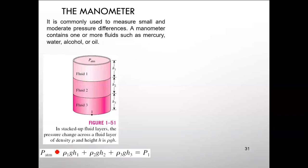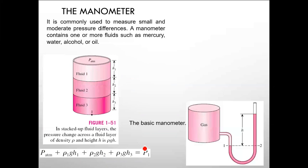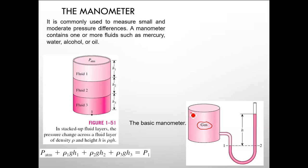Based on this principle, a manometer uses a container of gas connected to a liquid column. Gas has the same pressure throughout its container — whether at one point or another within the gas region — because the density of gases is very low and pressure is not significantly affected by height.